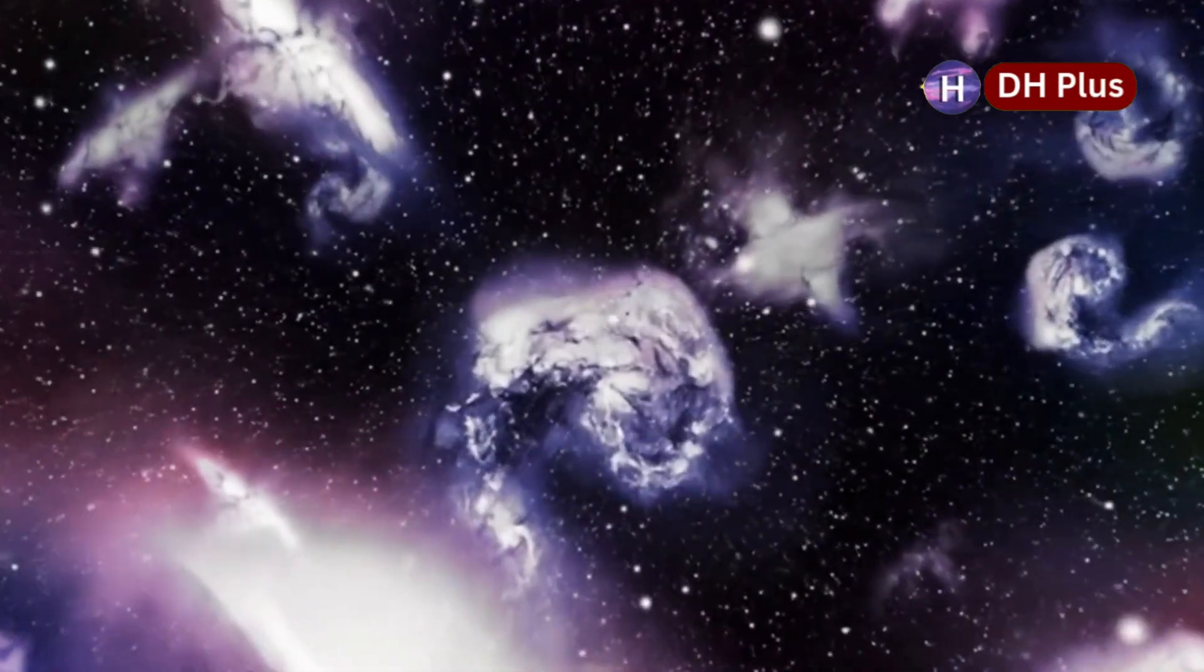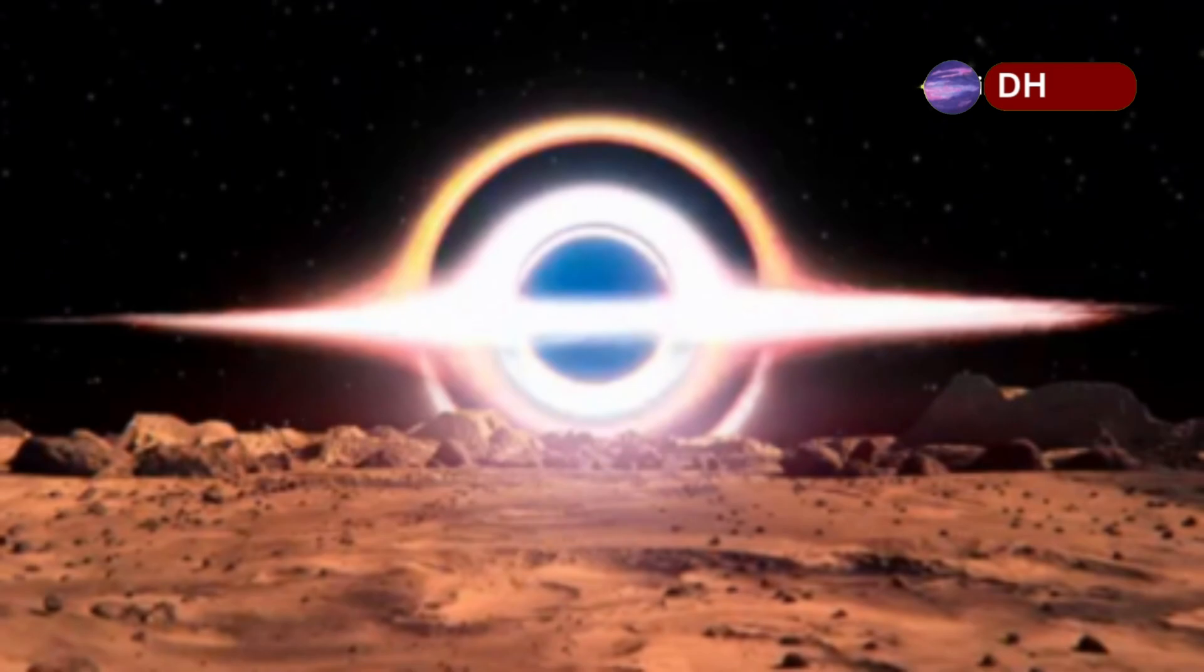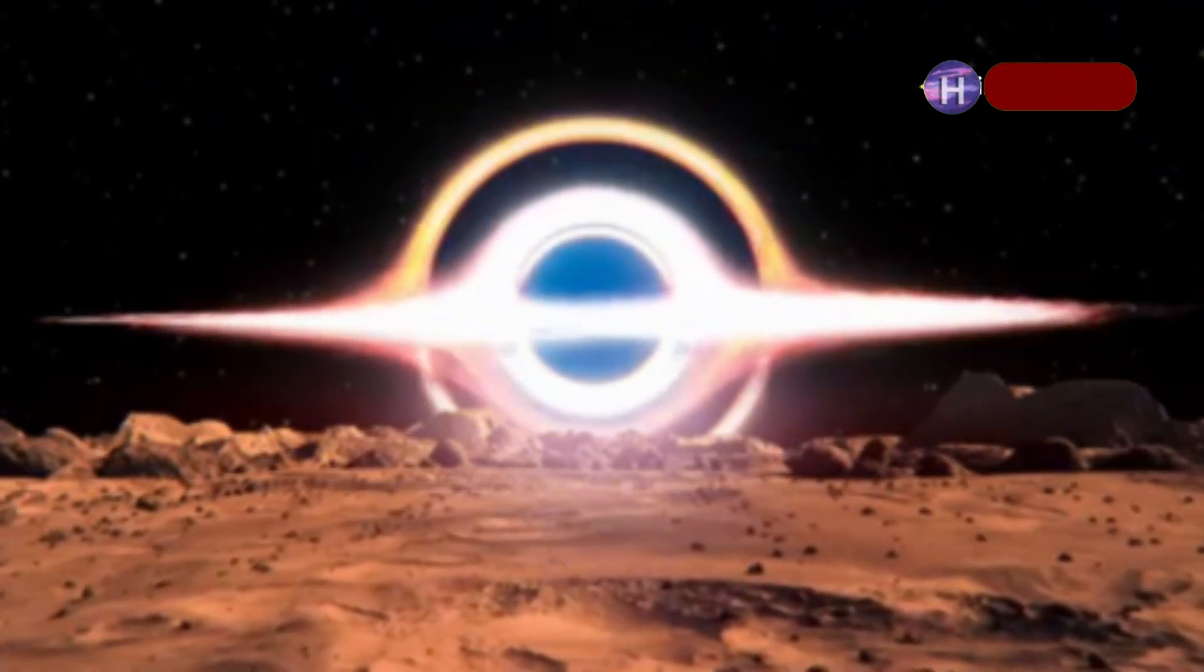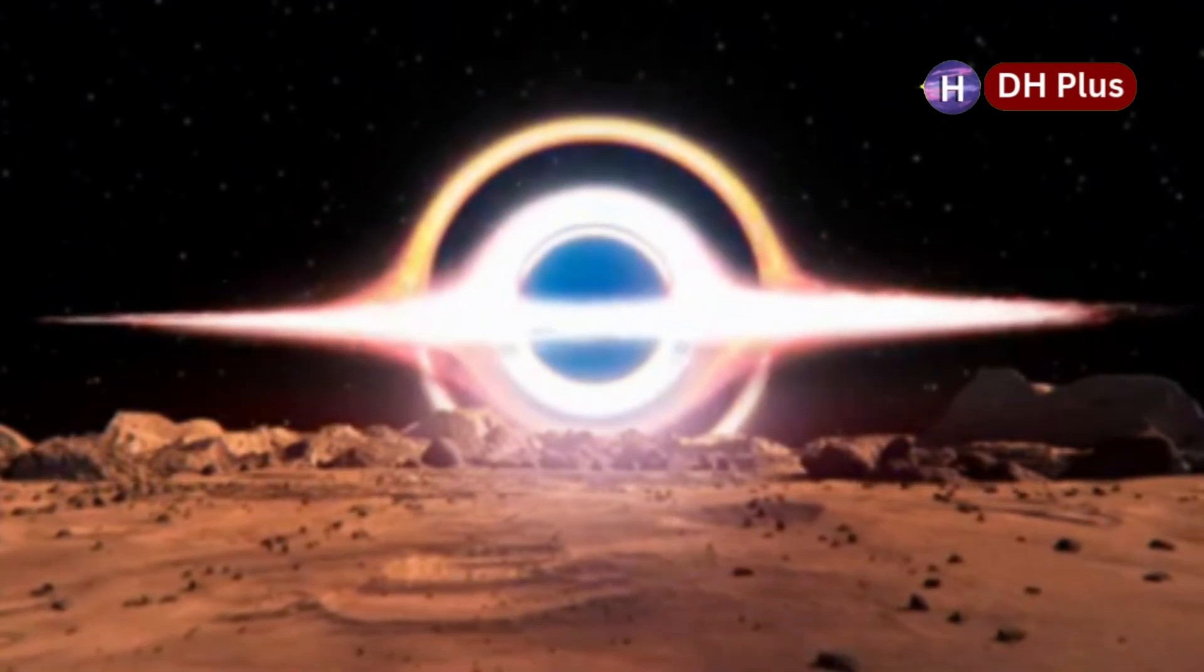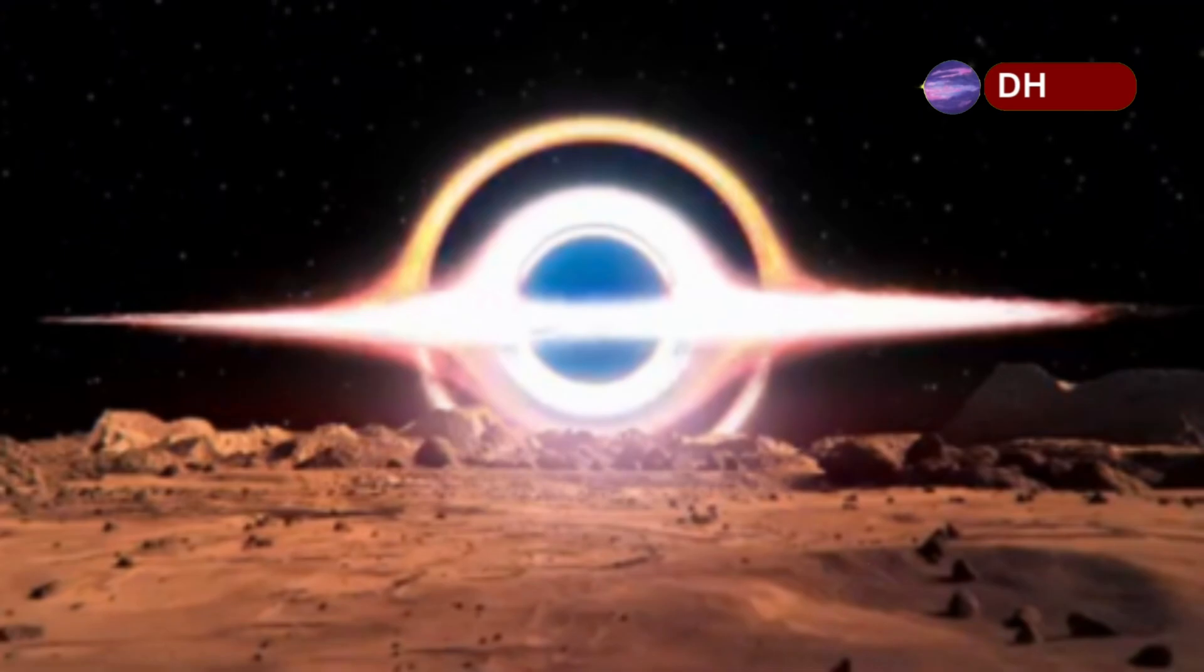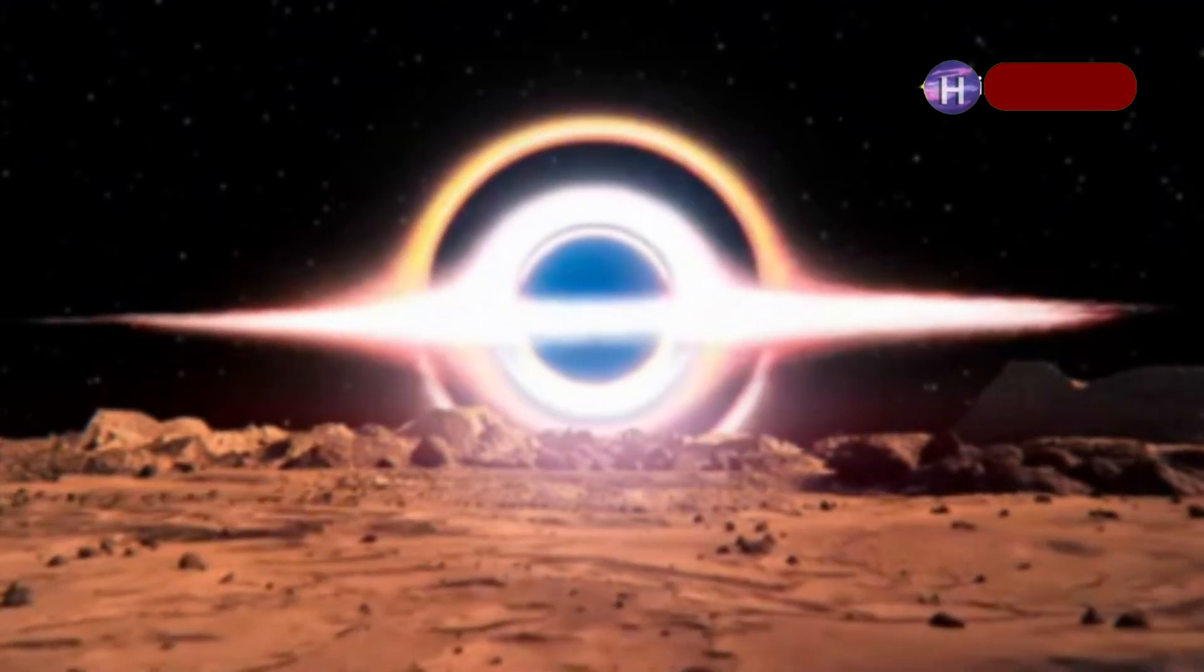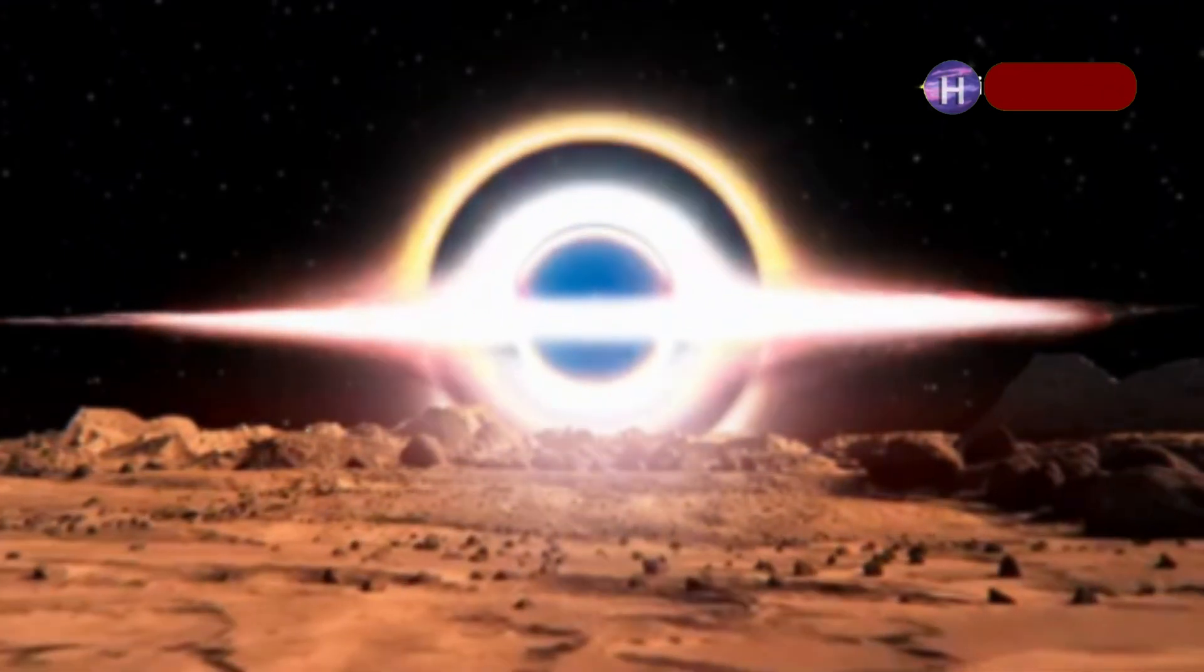Gaia BH3 is tiny by comparison, and in a universe now aged and matured. The Webb black hole however formed when the universe was still in cosmic infancy. Less than a billion years old. The contrast is staggering and the message is clear. The early universe wasn't just mysterious, it was wild, unpredictable. A place where giants were born in silence and reshaped the galaxies around them without a sound.